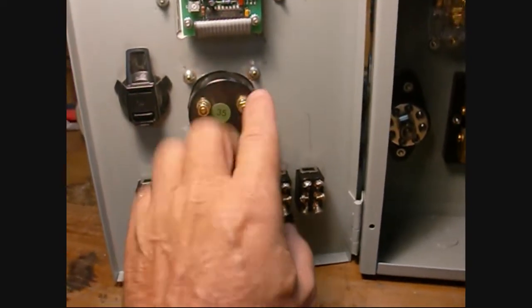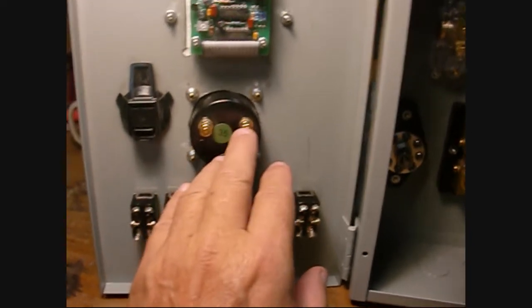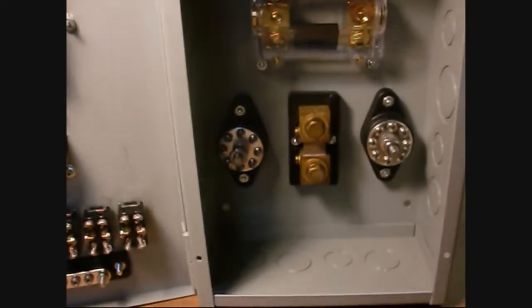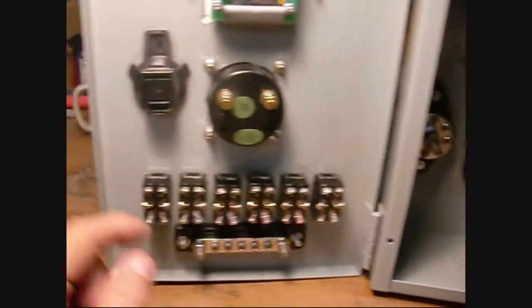The ammeter reads how much solar current is going to the charge controller. It comes out of there, up and then down to the charge controller, which is a separate box.